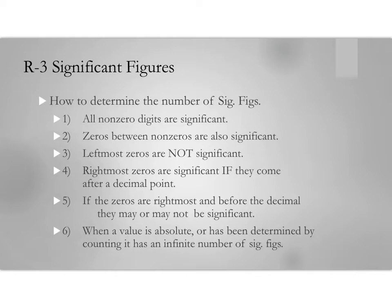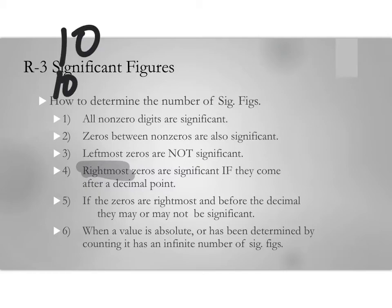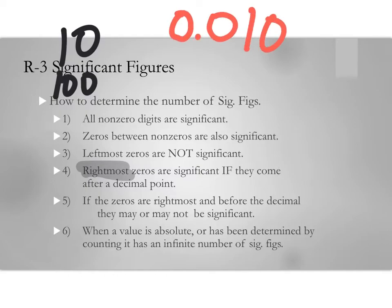Rule four: rightmost zeros are significant if they come after a decimal point. For example, 0.010 — this number has two significant figures: the one and the rightmost zero, because it comes after the decimal point.